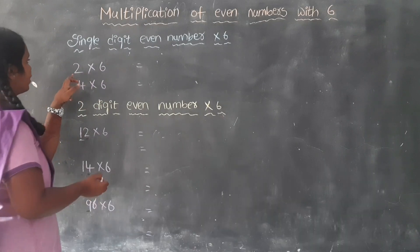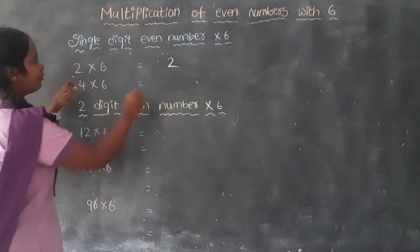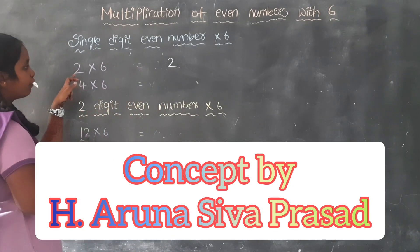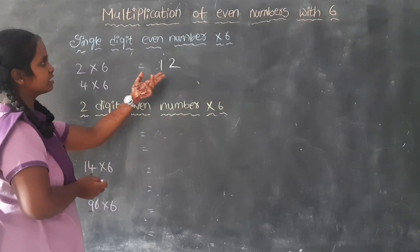2 times 6. First we will write the unit place as it is: 2. Now we want to fill the tens place. What is the half of 2? 1. The answer is 12.